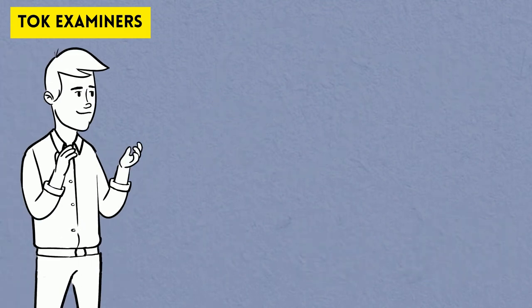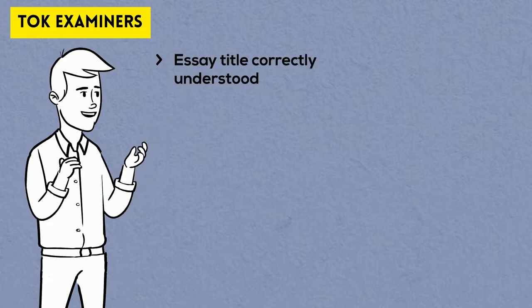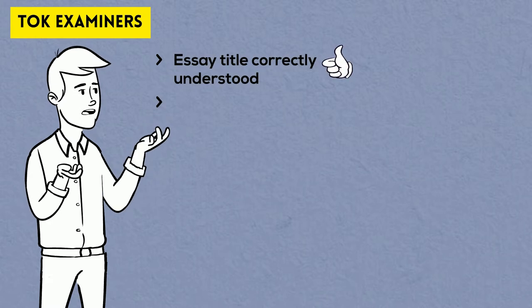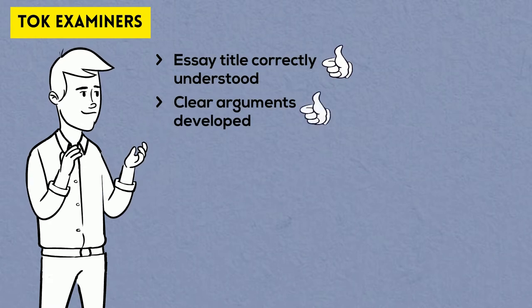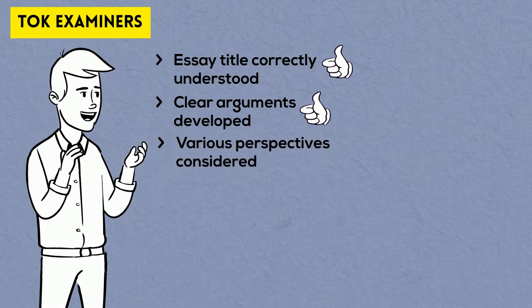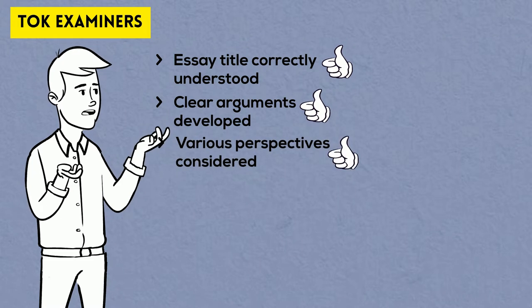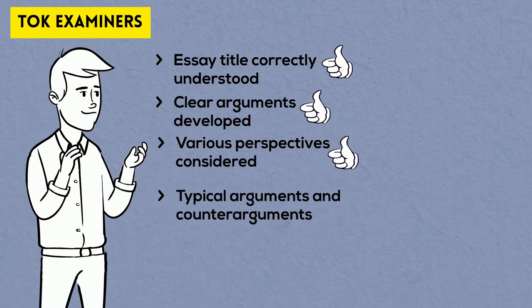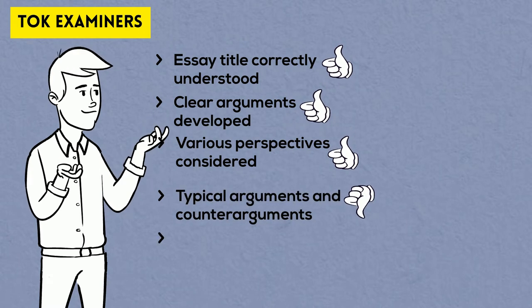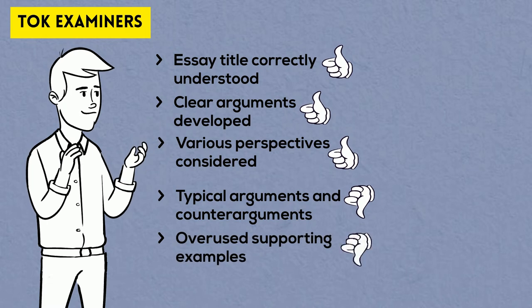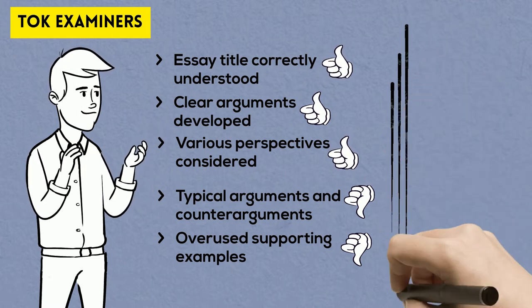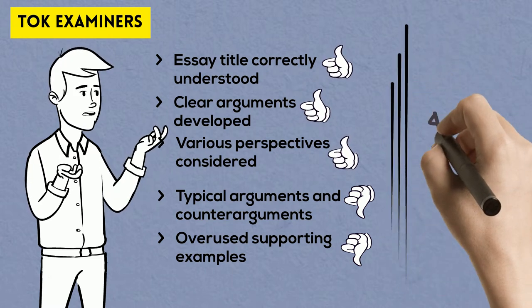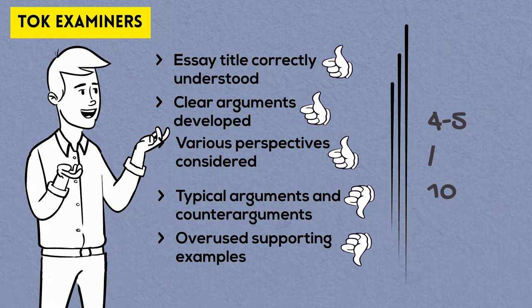Usually when I'm dealing with an essay that demonstrates correct understanding of the essay title, develops a clear argument in response to this title, considers various perspectives and all that, but only includes typical arguments and counter-arguments that are also discussed in most other essays and supporting examples that have been used by many other students, I know that this essay will most likely be given 4, maybe 5 marks out of 10. I will give you some examples.